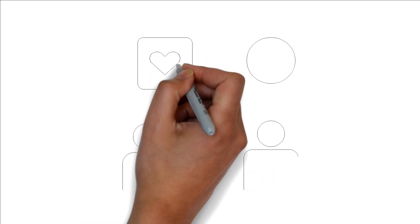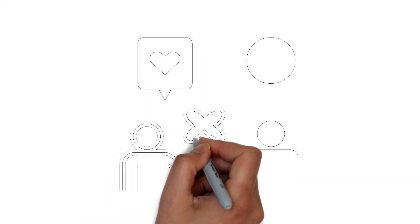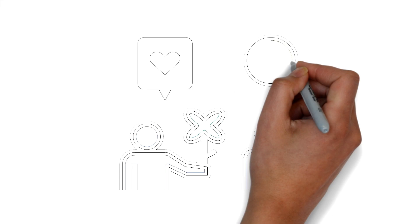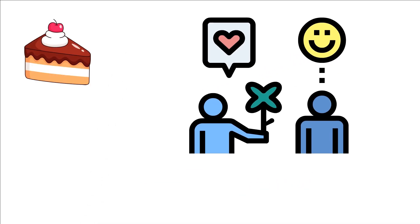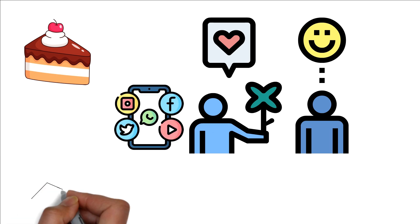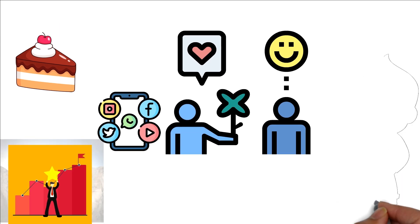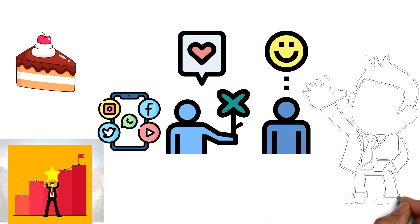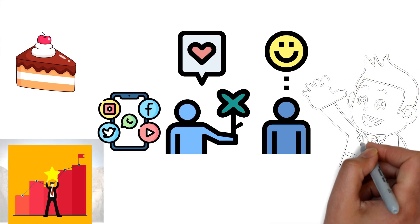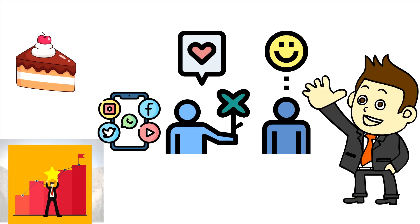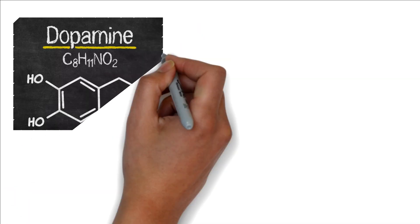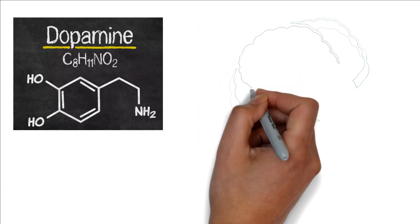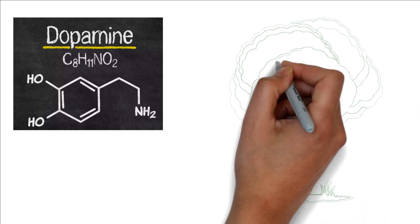Dopamine, often dubbed the feel-good neurotransmitter, is the brain's superstar when it comes to pleasure, reward, and motivation. Picture this: every time you savor a delicious dessert, get a like on social media, or achieve a personal goal, it's dopamine playing in the background, sparking joy and pushing you to chase that feeling again. This brilliant molecule not only motivates us towards delightful experiences, but also helps us learn from them, ensuring we remember those feel-good moments.